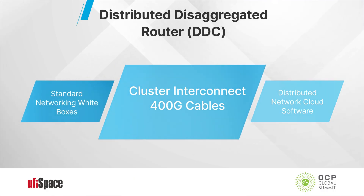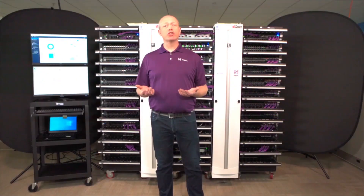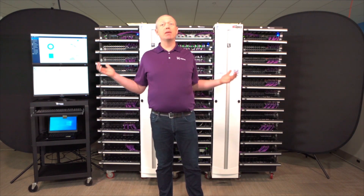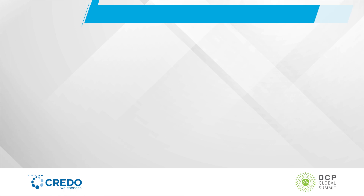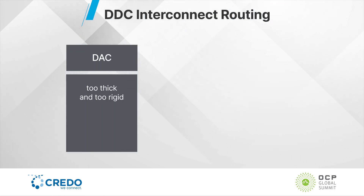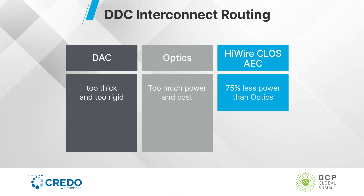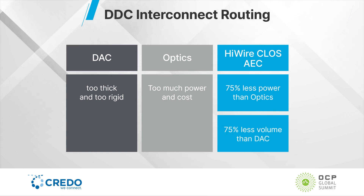The key difference between DVCs and traditional chassis is the way the interconnect is done. In a traditional chassis it would be a circuit board on the back. In a DVC, as you can see behind me, it's done with cables. Traditionally there are two types: DAC cables, which are too thick to route at this density, and optics, which have way too much power. What you see here are high-wear-class AECs, which have 75% less power than optics and take up 75% less volume than DACs.